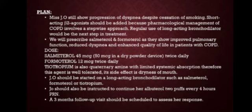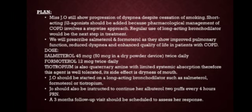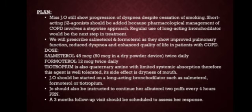We can also give tiotropium, which is an anticholinergic working on M1 and M2 muscarinic receptors. It is a quaternary amine with limited systemic absorption, resulting in fewer side effects and good tolerability. The side effect included with tiotropium is dryness of mouth. Jo should be started on a long-acting bronchodilator such as salmeterol, formoterol, or tiotropium, and should also be instructed to continue her albuterol two puffs every four hours PRN.